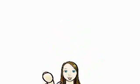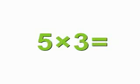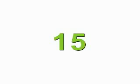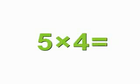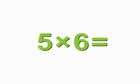Let's multiply by 5. 5 times 1 is 5, 5 times 2 is 10, 5 times 3 is 15, 5 times 4 is 20, 5 times 5 is 25, 5 times 6 is 30.